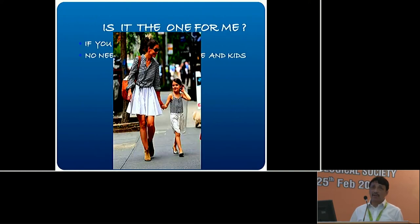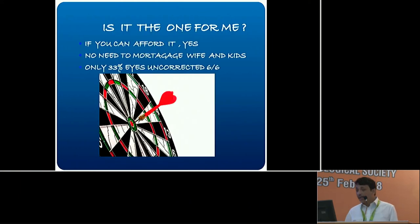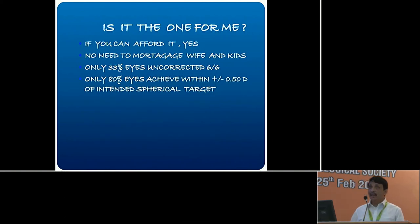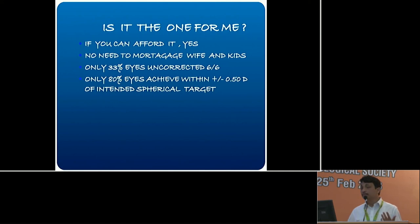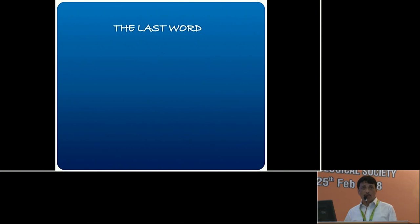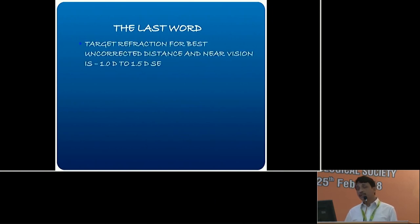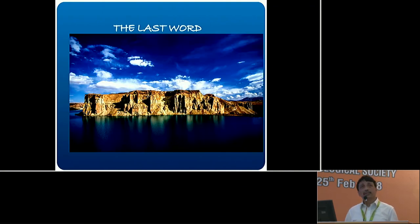But also remember, there's no need to mortgage the wife and kids to buy this. Because even in the best hands with optical biometry, only 33% of eyes achieve uncorrected 6/6 — these are stats from our latest paper. And in experienced surgeons, only 80% of eyes achieve within ±0.5 diopters of the intended spherical target. So it's very, very good — but remember the target refraction for best uncorrected distance and near vision is still minus 1 to minus 1.5 diopters spherical equivalent, preferably with against-the-rule astigmatism.